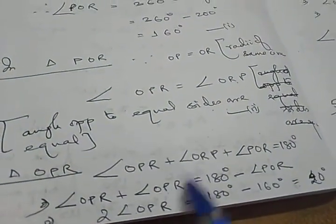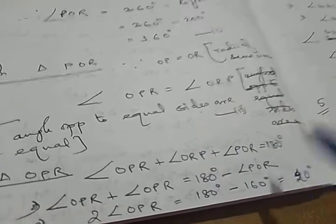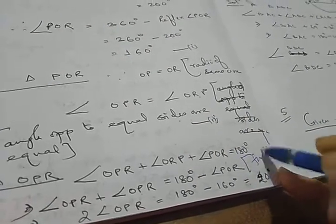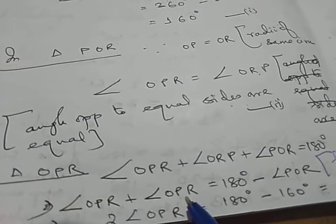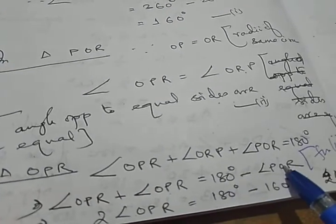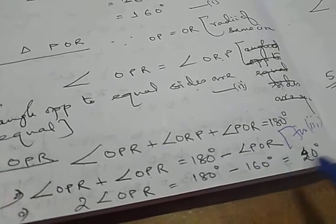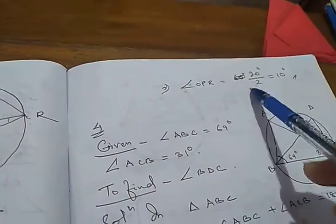Using the angle sum property, angle OPR plus angle ORP plus angle POR equals 180 degrees. Since angle OPR equals angle ORP, we can substitute: twice angle OPR equals 180 minus 160, which is 20 degrees. Therefore angle OPR equals 20 divided by 2, which is 10 degrees. That is our answer.